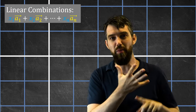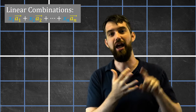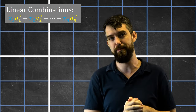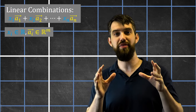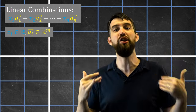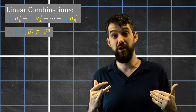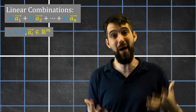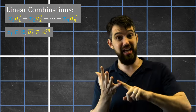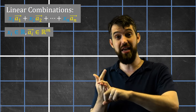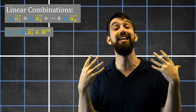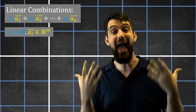So a linear combination involves scalar multiplications and vector additions as the two operations. The coefficients — the scalar multiples in blue — are just real numbers like 7 or pi. The actual vectors a1, a2, and a3 in yellow are vectors that live somewhere in Rᵐ.